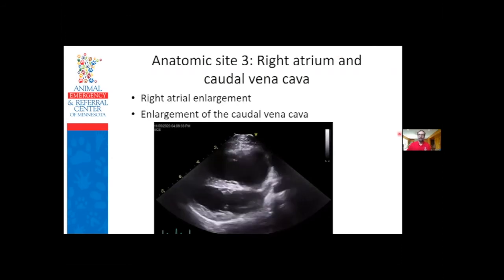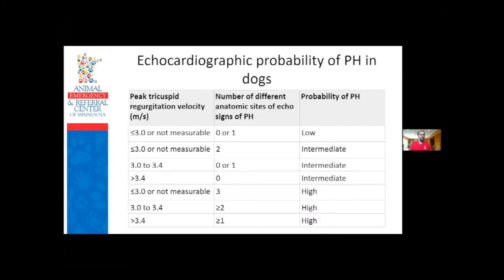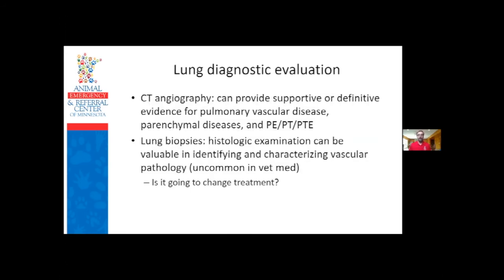The consensus statement tries to define a framework: take the tricuspid regurgitant velocity, whether you have changes in the ventricles, pulmonary artery, or right atrium, put that together and say that makes the possibility of pulmonary hypertension low, intermediate, or high. That covers identifying pulmonary hypertension yes or no. The rest of diagnostic testing is about what the underlying cause is and which category it falls into.